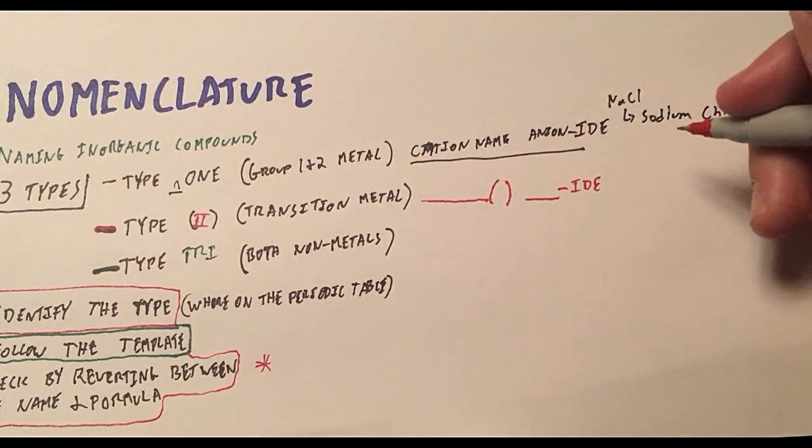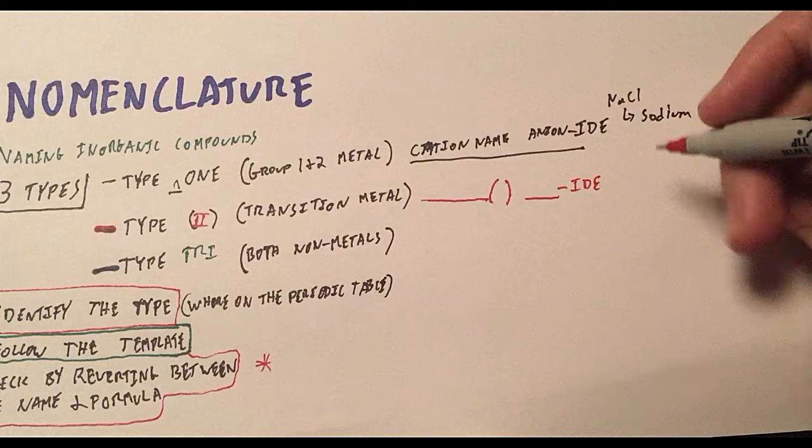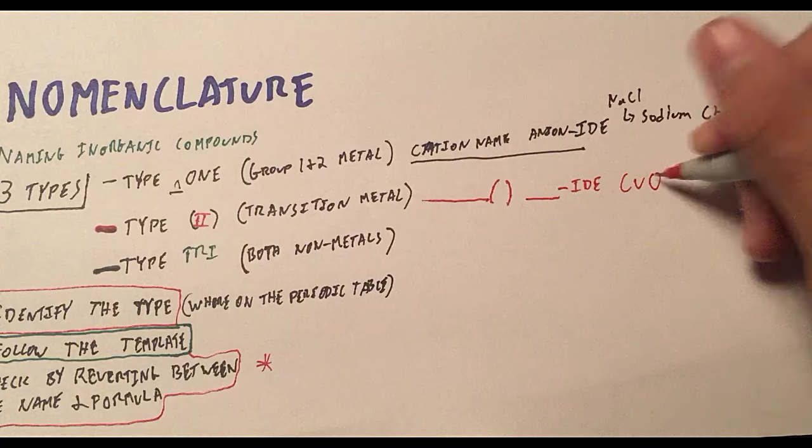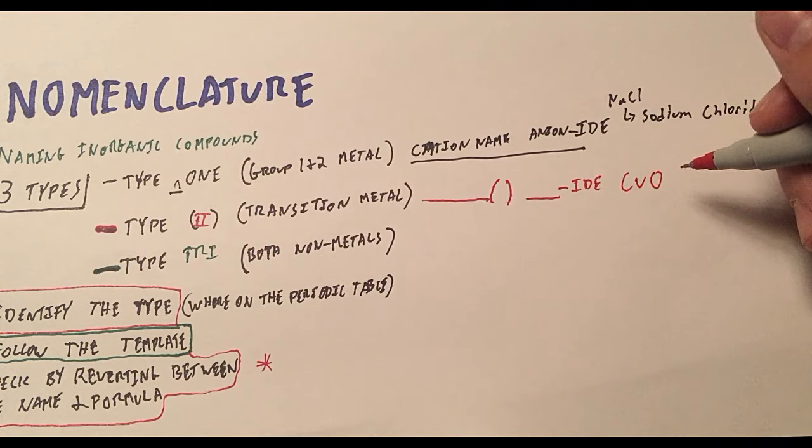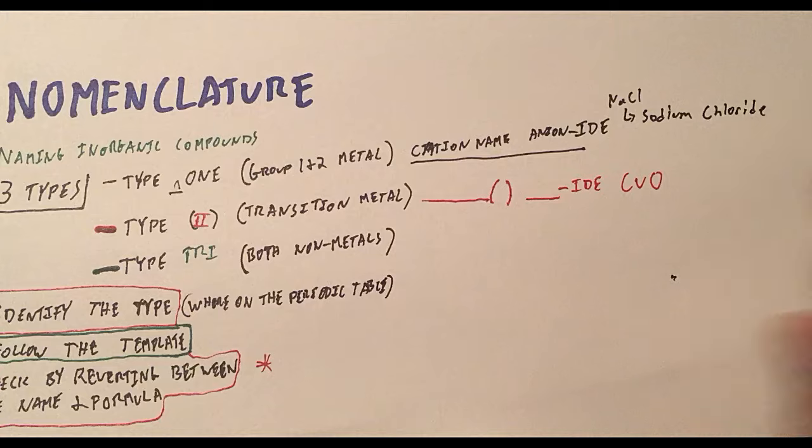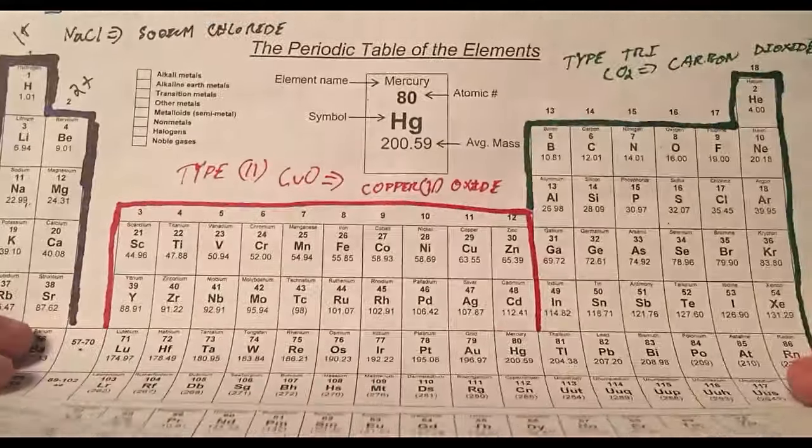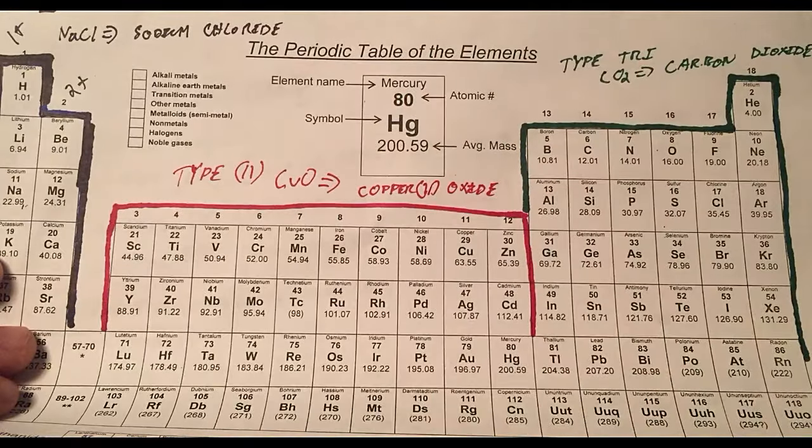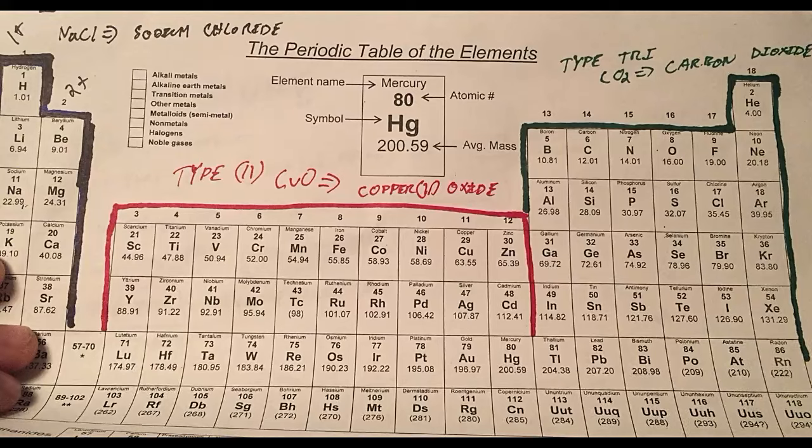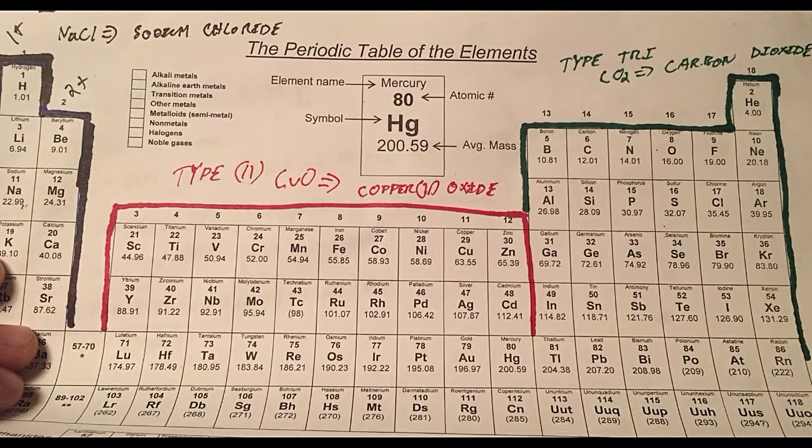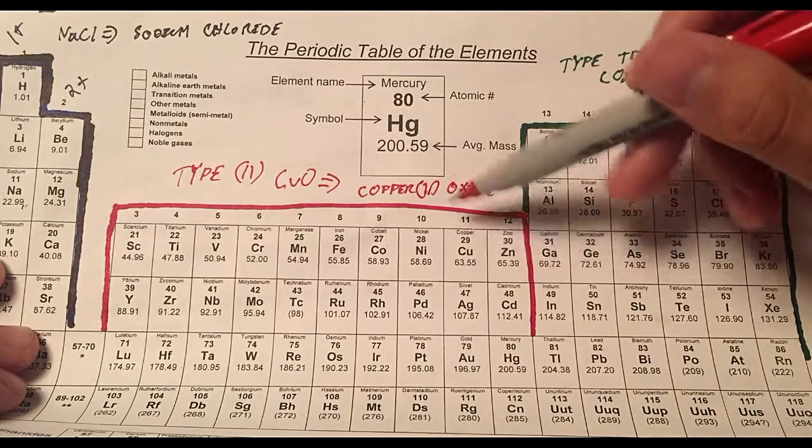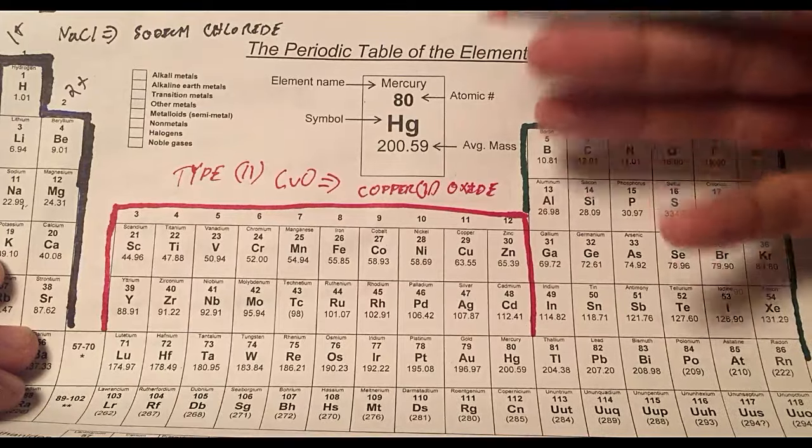So an example of this would be something like copper oxide. Now to do this name, I have to consider what the charge on copper is, because it's a Type 2 naming. And here I see Type 2 copper. What this means is that we do not know the charge on copper. Copper can take different oxidation states. That's why it has different colors. It can form hydroxides and things like that.